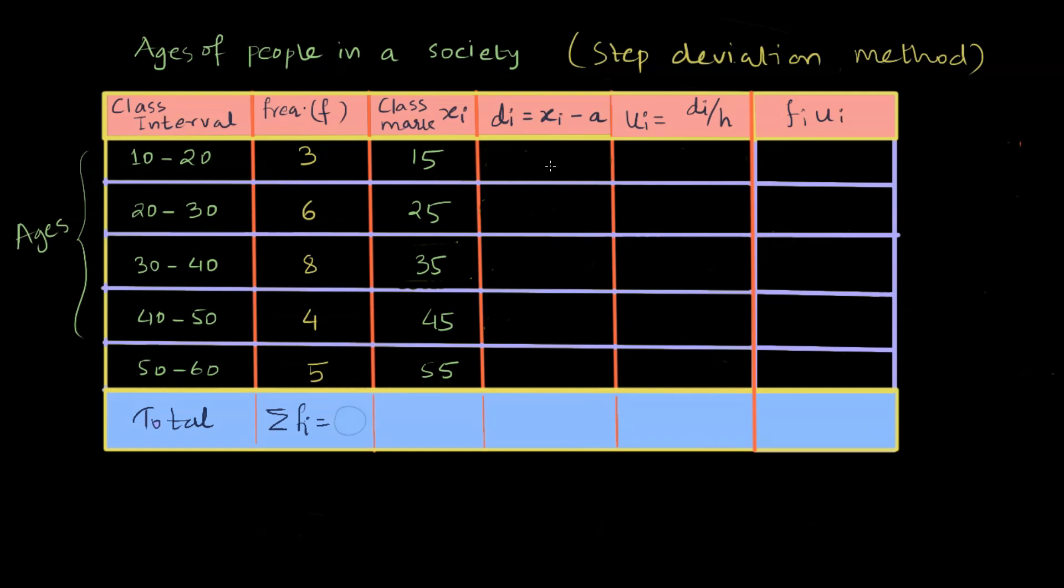And we want to find out the deviation now. First we need to choose the assumed mean. It is found by finding out the mid value when we arrange the class mark in ascending or descending order. We can clearly see that 35 can be chosen as the assumed mean.